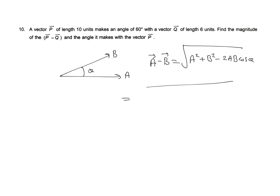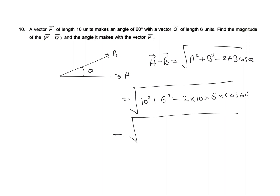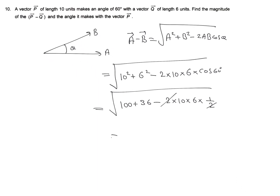Putting in the values: a squared is 10 squared, b squared is 6 squared, minus 2 into 10 into 6 into cos 60. Since cos 60 is 1/2, the 2 and 1/2 cancel, giving under root of 100 plus 36 minus 60. So that is 40 plus 36, which equals 76. The magnitude is root 76.